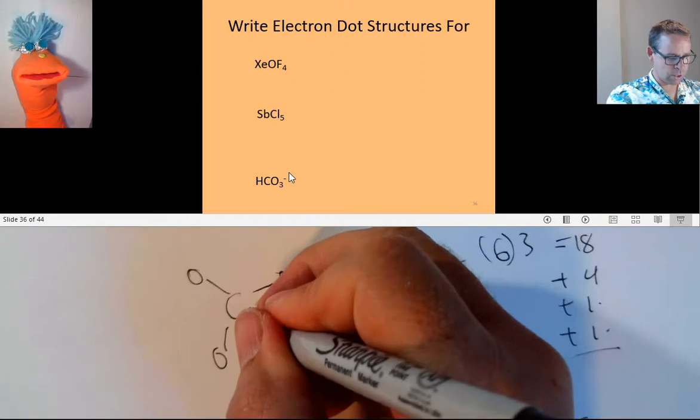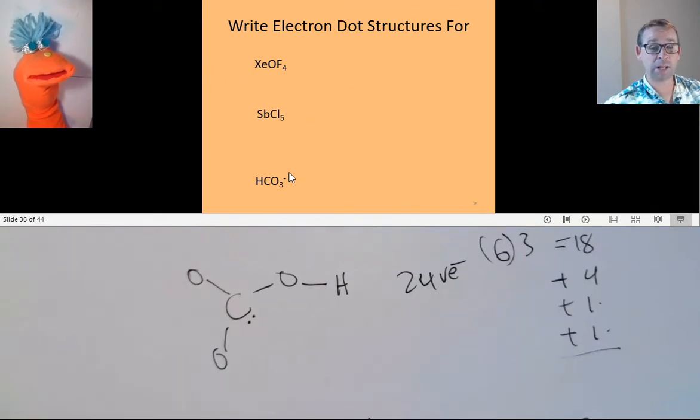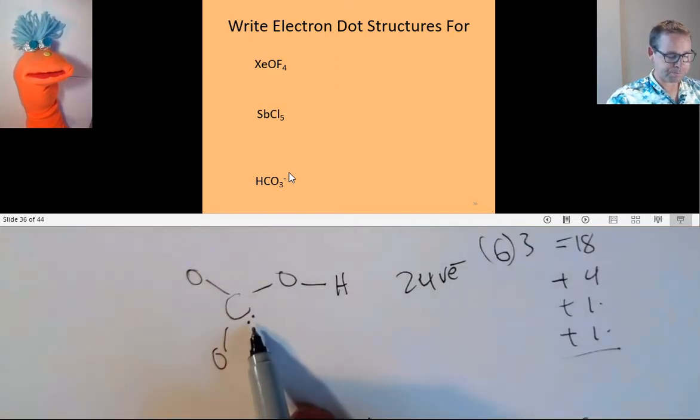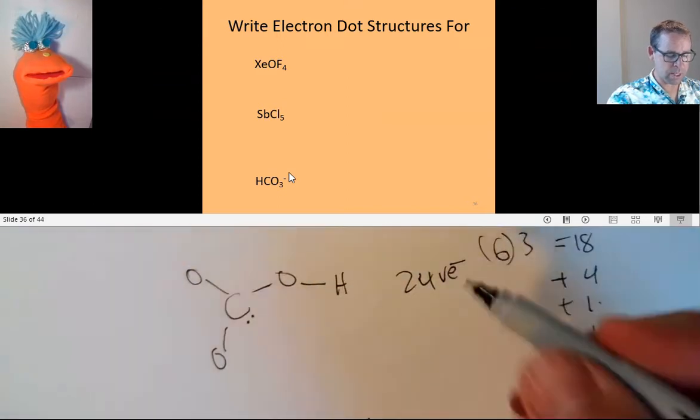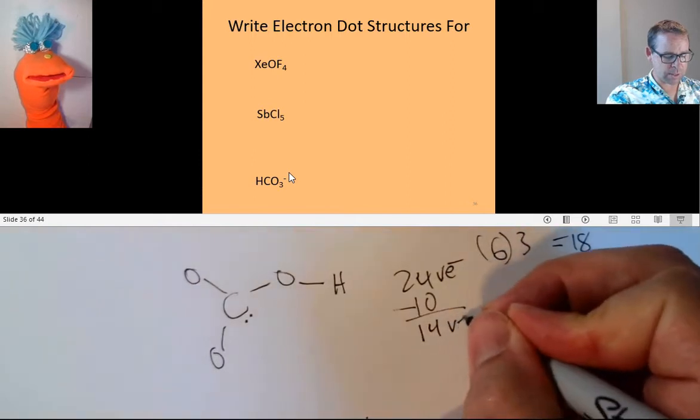We start off, let's see, 1, 2 there. We've got to fill this in. I would suggest you push pause right now and try to finish up, get as far as you can, and then you follow along. 24 valence electrons, I pushed 2 there. So I have 10 that I've used up altogether. So I have 14 valence electrons left.